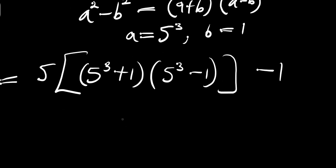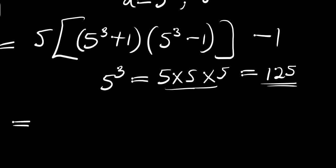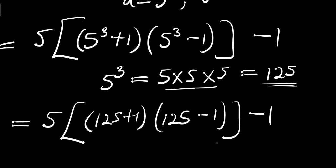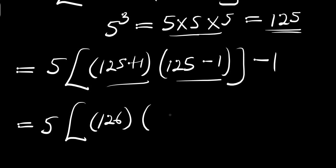Now we find the value of 5 power 3: 5 times 5 is 25, and 25 times 5 is 125. Substituting 125 for 5 power 3, we now have 5 times (125 plus 1) times (125 minus 1), with minus 1 outside the bracket. So 125 plus 1 is 126 and 125 minus 1 is 124.